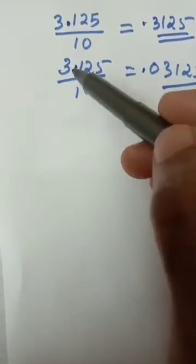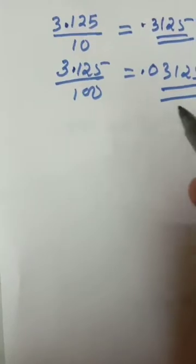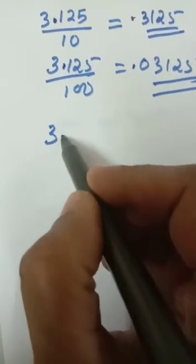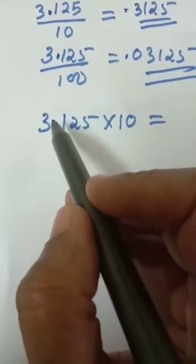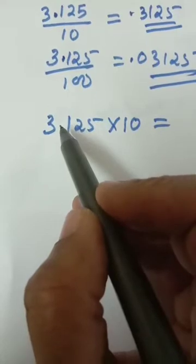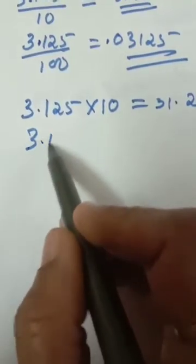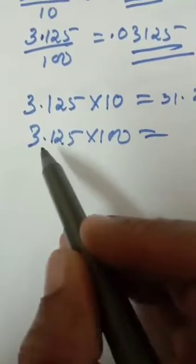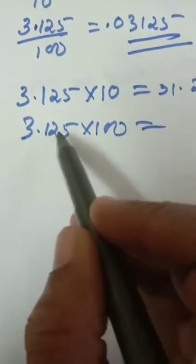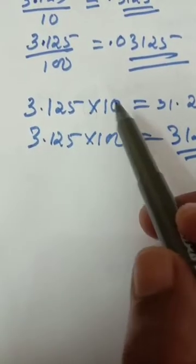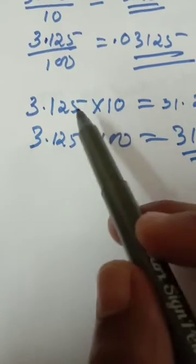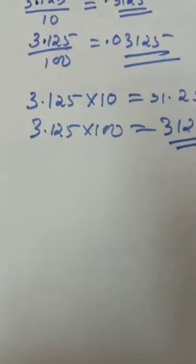When you multiply by 10, 100, 1000, the decimal moves forward. Suppose 3.125 multiplied by 10: the decimal number moves after 1 digit, giving 31.25. 3.125 multiplied by 100: count 2 digits after decimal, move the point — you get 312.5. When you multiply, the decimal moves forward. When you divide, the decimal moves back. That is what you have to understand. This is section 8.1.